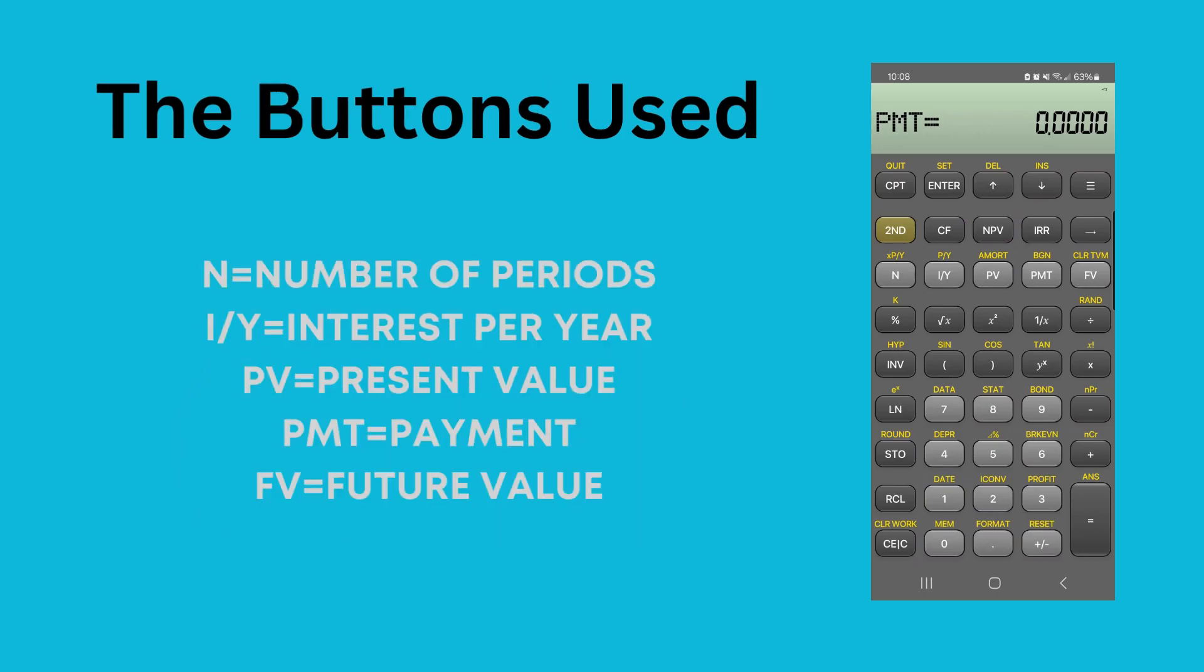What we're doing today is we're using the buttons that are on the third row from the top: N, IY, PV, PMT, and FV.